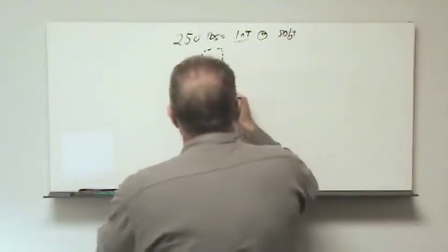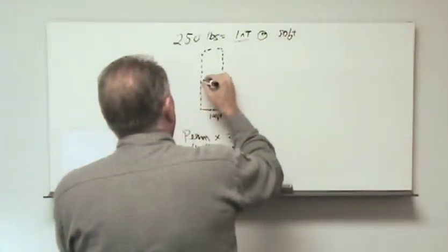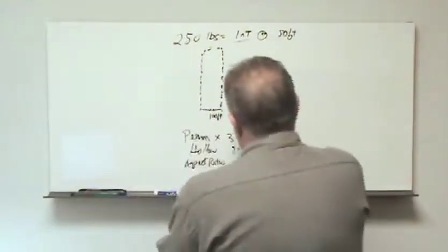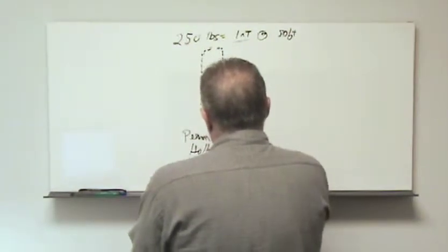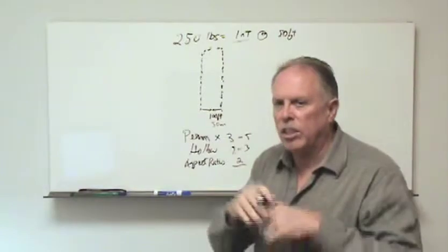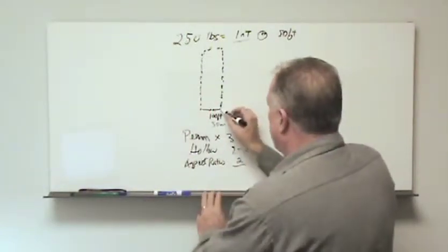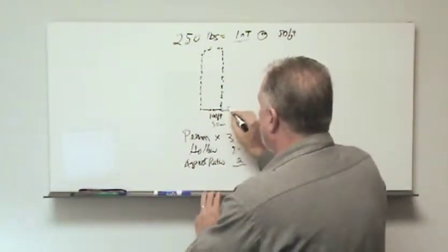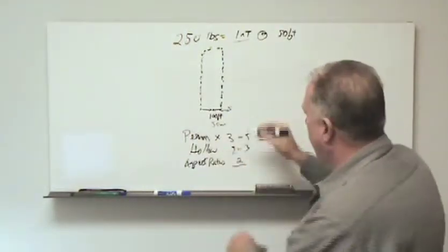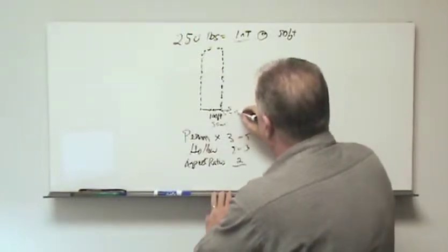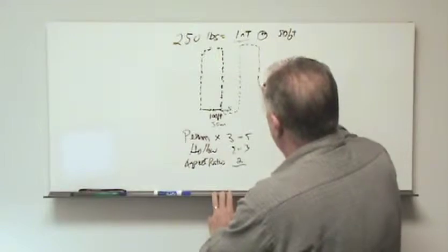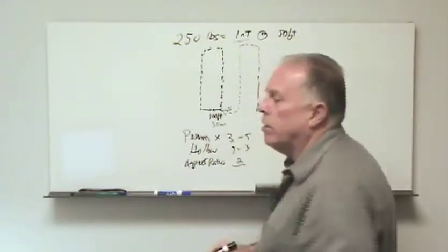This means that our survey grid could be 100 foot line spacings, or 30 meters. And the reason is because the magnetometer sees in all directions, it sees omnidirectionally. So we will see out both sides 50 feet, a total of 100 foot swath. So that means that we can in fact design our survey with 100 foot line spacings.